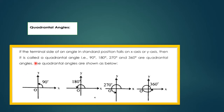Quadrantal angles: if the terminal side of an angle in standard position falls on the x-axis or y-axis, then it is called a quadrantal angle. 90°, 180°, 270°, and 360° are the quadrantal angles. These are shown as: 90°, 180°, 270°, and 360°.